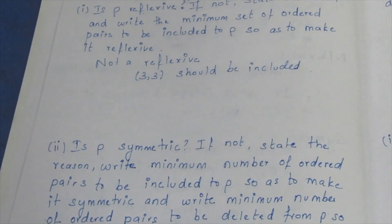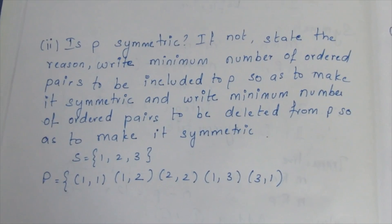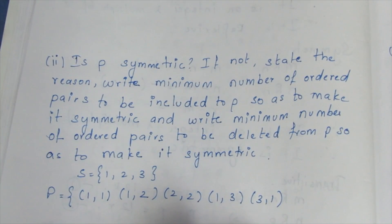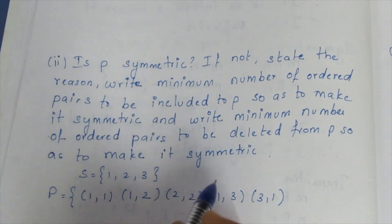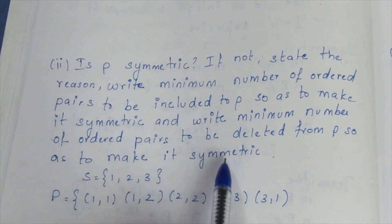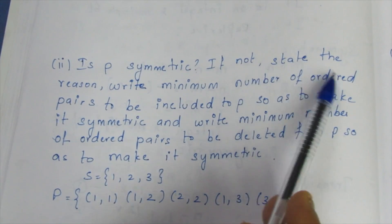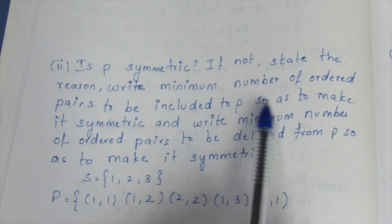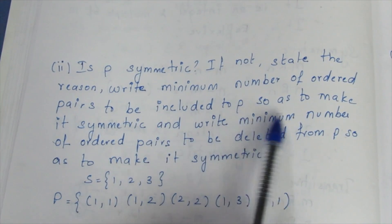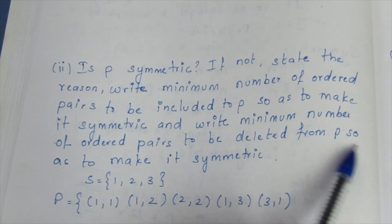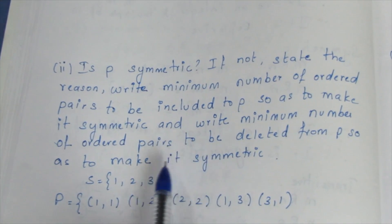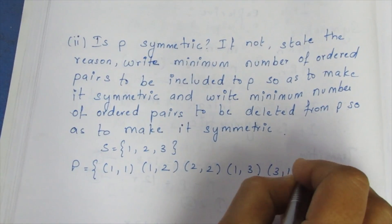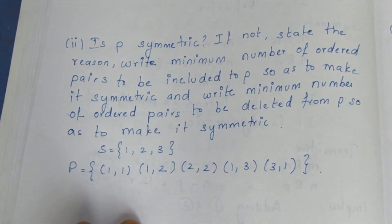Second question: Is P symmetric? If not, state the reason. Write the minimum number of ordered pairs to be included in P so as to make it symmetric, and write the minimum number of ordered pairs to be deleted from P so as to make it symmetric.